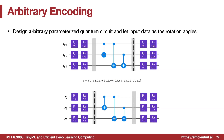Arbitrary encoding uses a designed PQC (such as the efficient SU2 circuit) where blocks contain rotation parameters. A vector with 12 values can be naturally encoded into the 12 rotation blocks of the circuit. After encoding, any additional circuit can be appended to perform the target classification task.